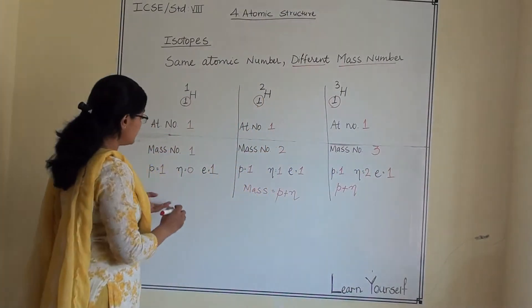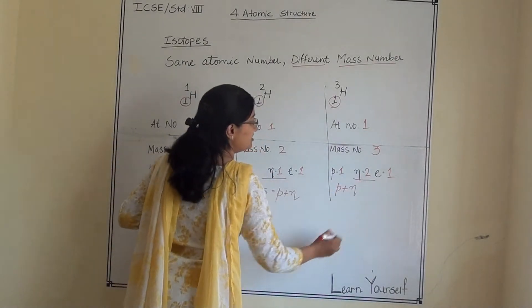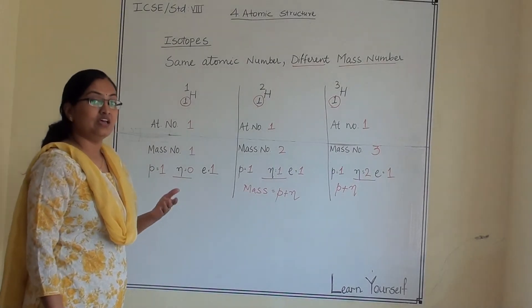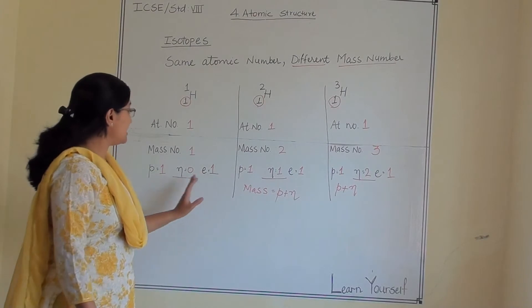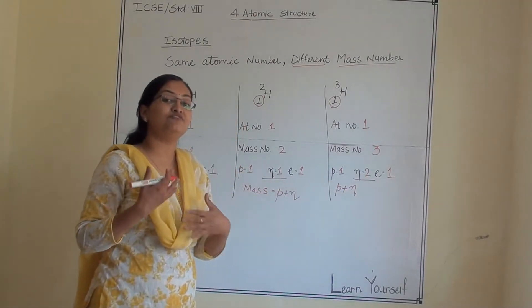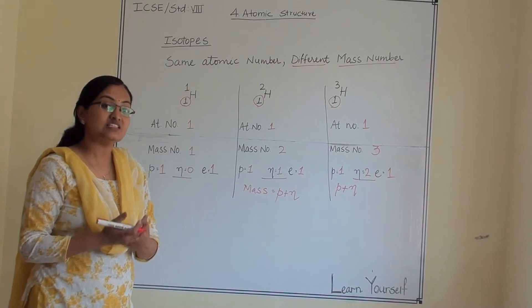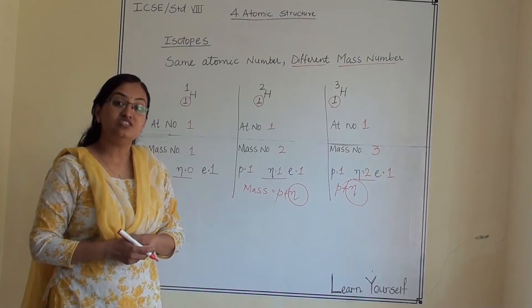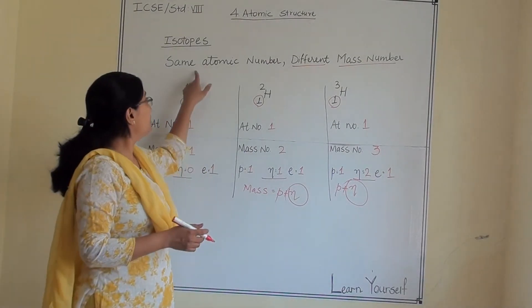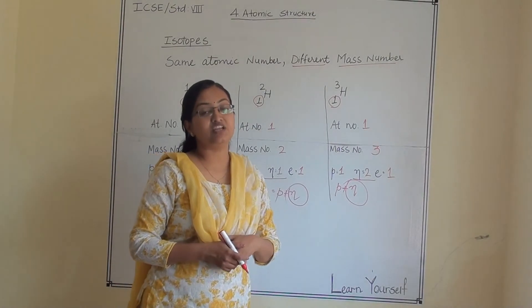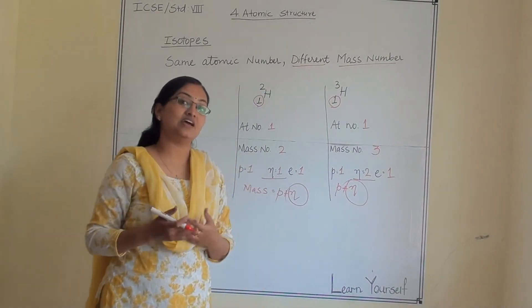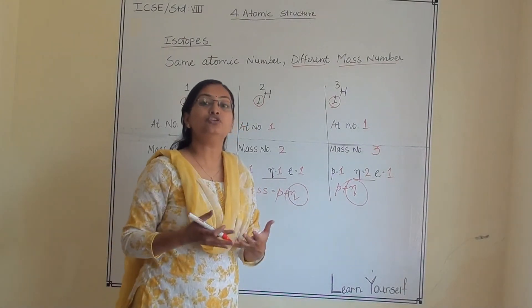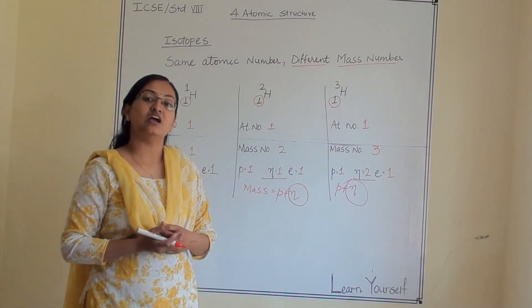If you look at the three isotopes, they differ in their neutron count. We can say that isotopes have the same proton and electron counts but differ in neutron count. Since they differ in neutron count, their mass numbers are different. So isotopes have the same atomic number but different mass numbers, because each isotope has a different number of neutrons.